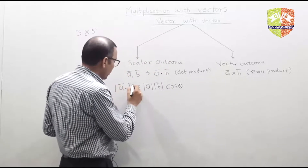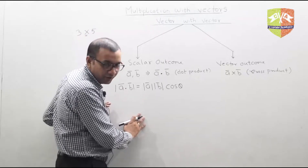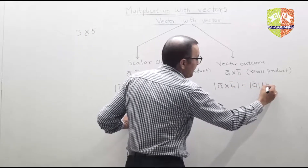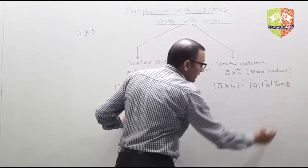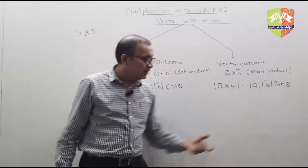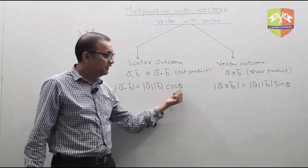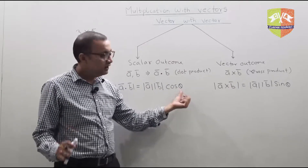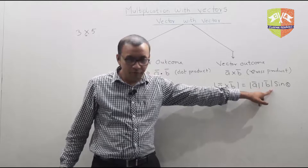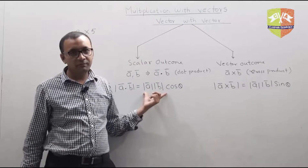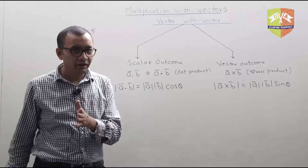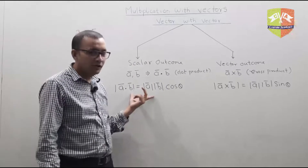So a dot b is ab cosθ — that is the magnitude of a dot b, and there is no direction. The magnitude of a cross b is defined as ab sinθ. So one is ab cosθ and the other is ab sinθ. The minimum value of the dot product happens when theta is 90 degrees, and then the maximum value of the cross product occurs. Similarly, the minimum value of the cross product happens when theta is 0, and then the dot product is maximum. If vector a is perpendicular to vector b, since the angle is 90 degrees, the dot product will be 0.